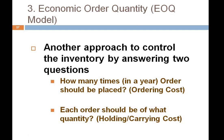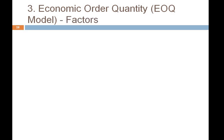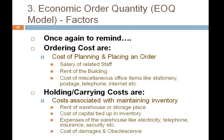We will find answers that have a rational and logical framework, which gives birth to the EOQ formula. There are two key factors: ordering cost and holding cost. Ordering cost is the cost of planning and placing an order — for example, salary of related staff, rent of the building, and miscellaneous office items like stationery, postage, telephone, and internet.